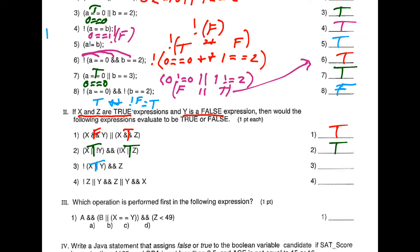NOT true becomes false. This is the other example of short-circuit evaluation: if we have an AND statement and the first thing is false, we're not even going to look at the second half. We automatically say it's false, because for it to be true both have to be true — if the first one's not true, the whole thing can't be true.